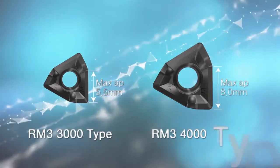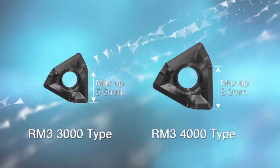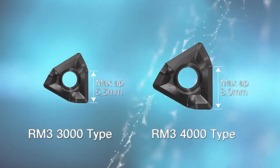RM3 3000 type and RM3P 4000 are two different size options available for RM3.